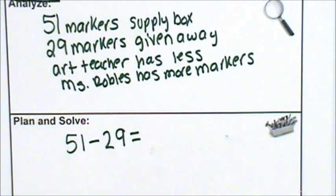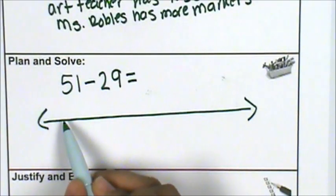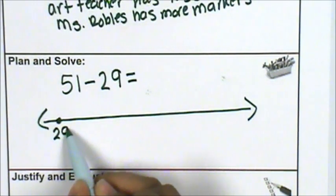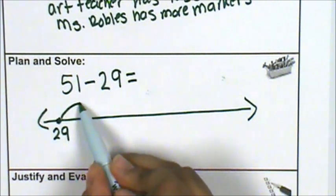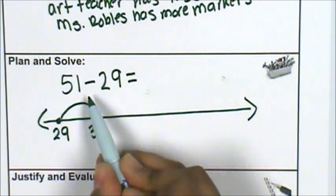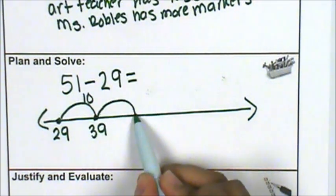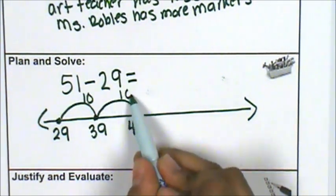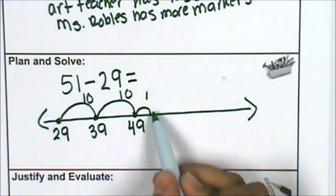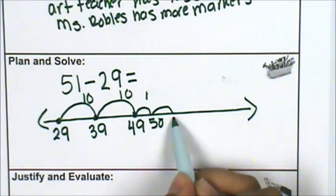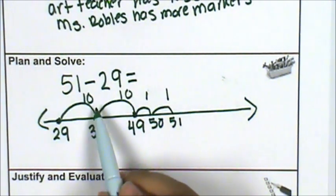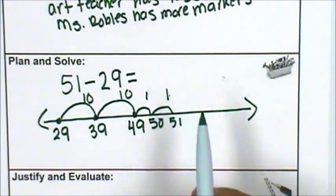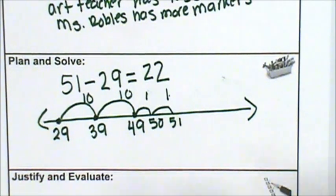What strategy can I use to solve the problem? I'm going to use an open number line to find the difference between 51 and 29. I'm going to start with 29, jump to 39 — that's 10. Jump to 49 — 10 more. Then 50, 51. So my answer is 10, 20, 21, 22. There are 22 markers left.